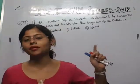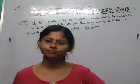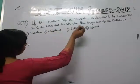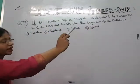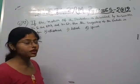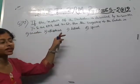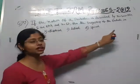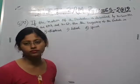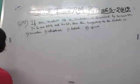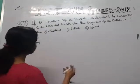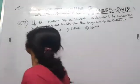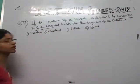This is a question about the motion of a particle. If the motion of a particle is described by x equals to 5 cos 8π t and y equals to 5 sin 8π t, and z equals to 5t, then the trajectory of the particle is?